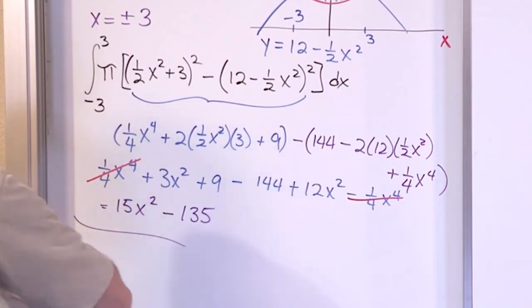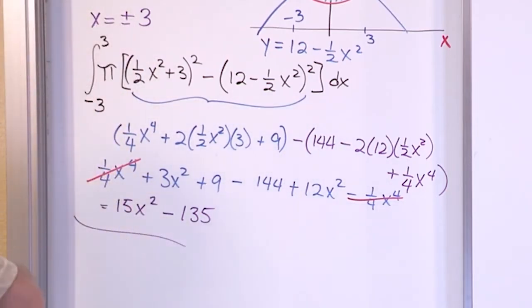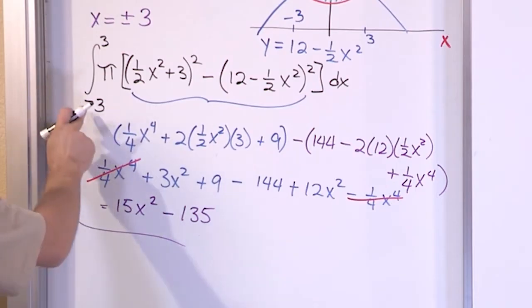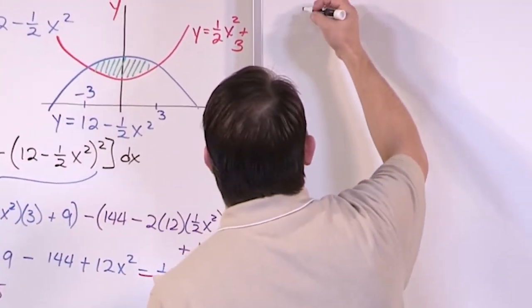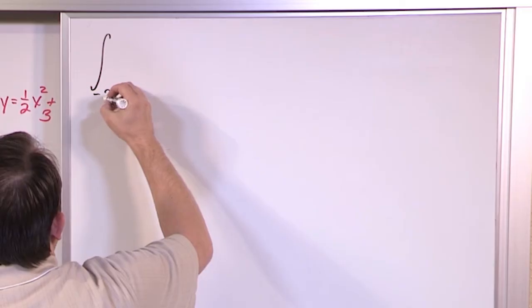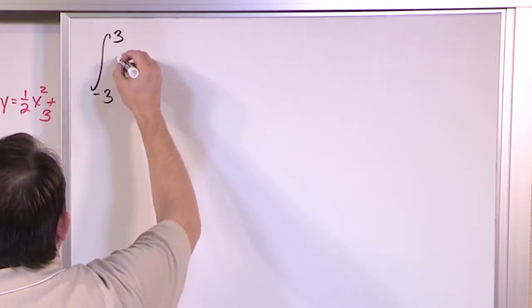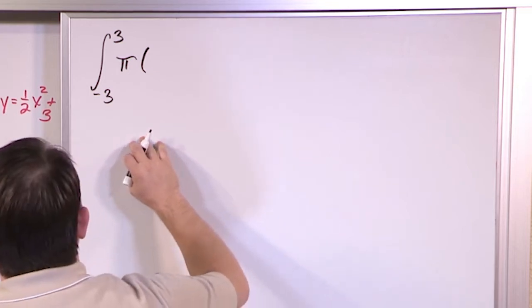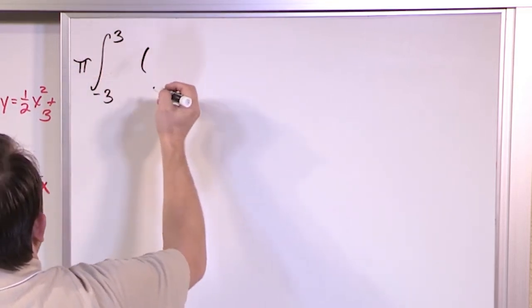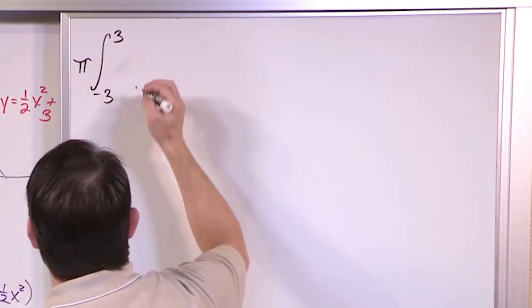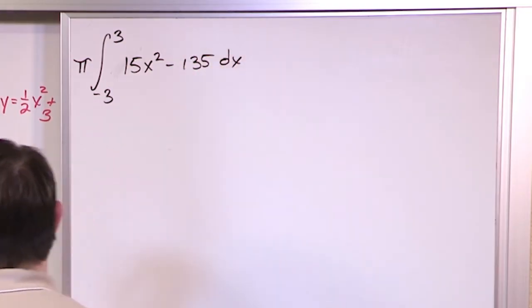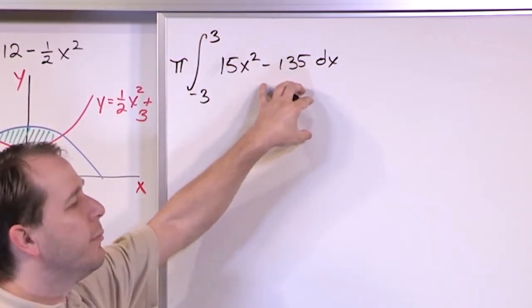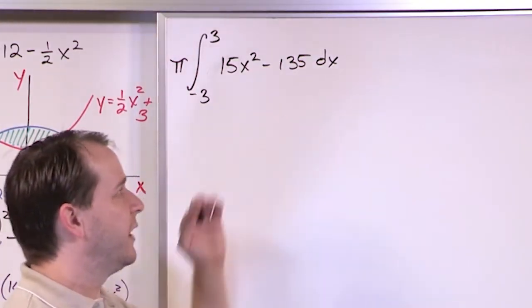The integral reduces to: integral from negative 3 to positive 3 of pi times (15x² minus 135) dx. We pull pi outside the integral, giving pi times the integral from negative 3 to 3 of (15x² minus 135) dx. This is a straightforward integral to solve.